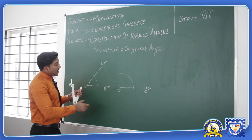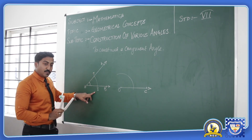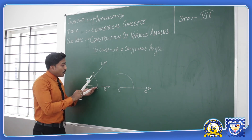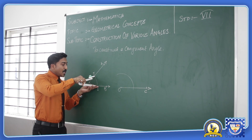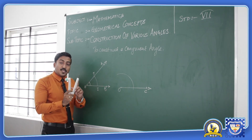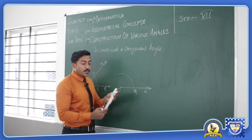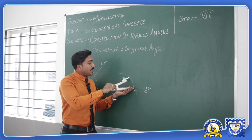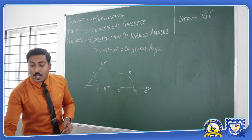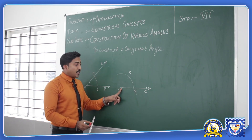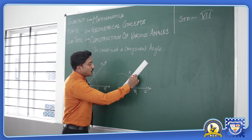Now, we will name this particular intersecting arc as S and T. So we have an arc over here for measurements. Putting the pointed head on point S we will measure the particular distance between the two angles with the help of the markings. As soon as we get the measurements we will not disturb this measurement. We will come down to this particular marking point and name it as Q. Putting this pointed head on the point Q, I will mark a particular arc intercepting at the point X.